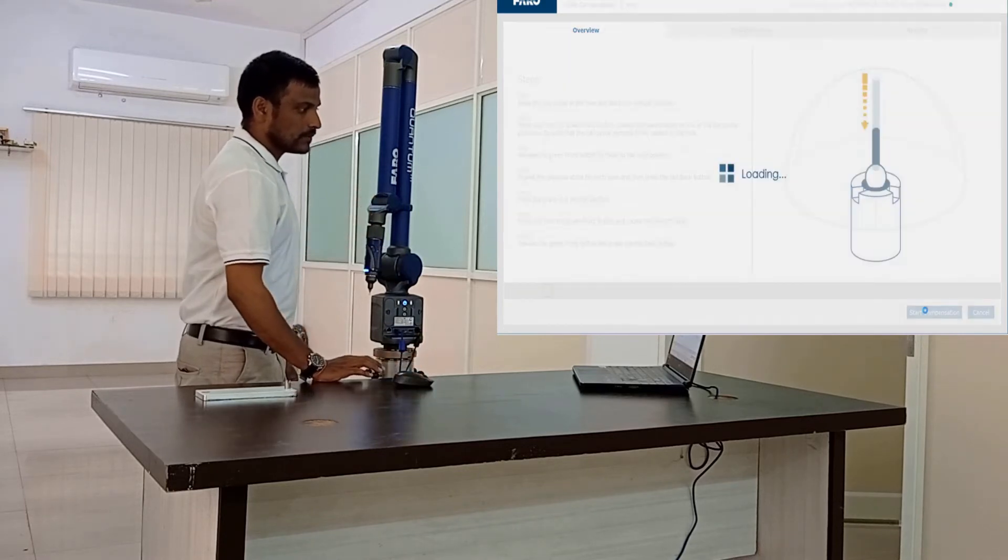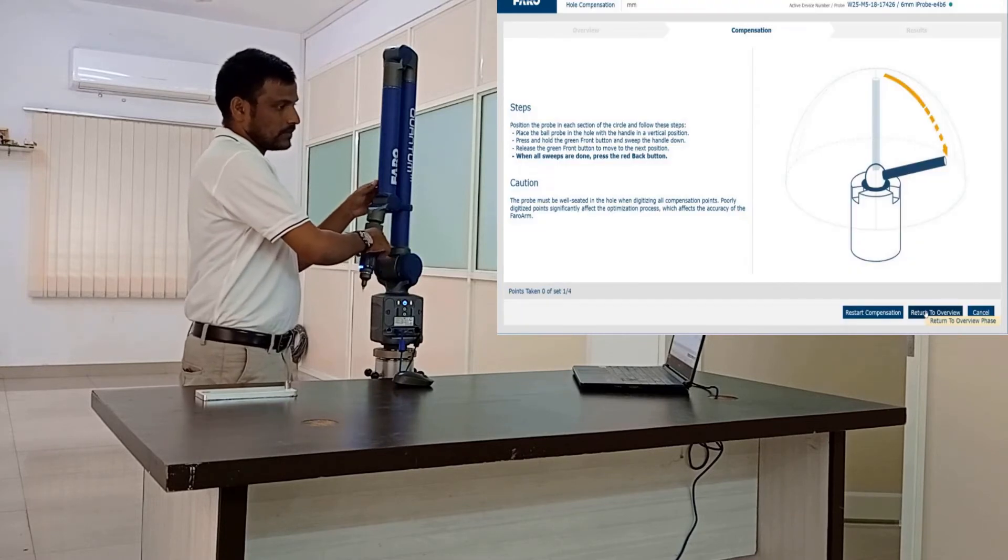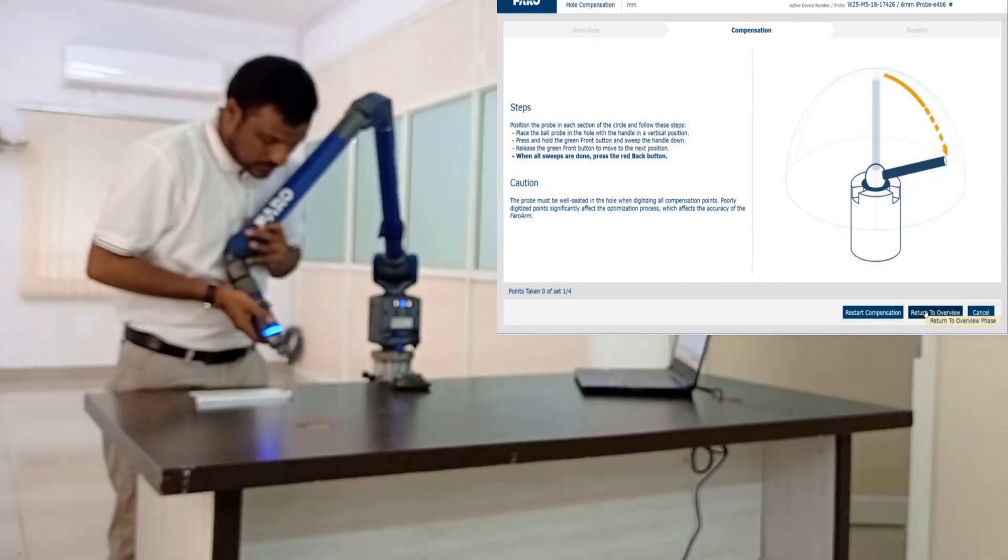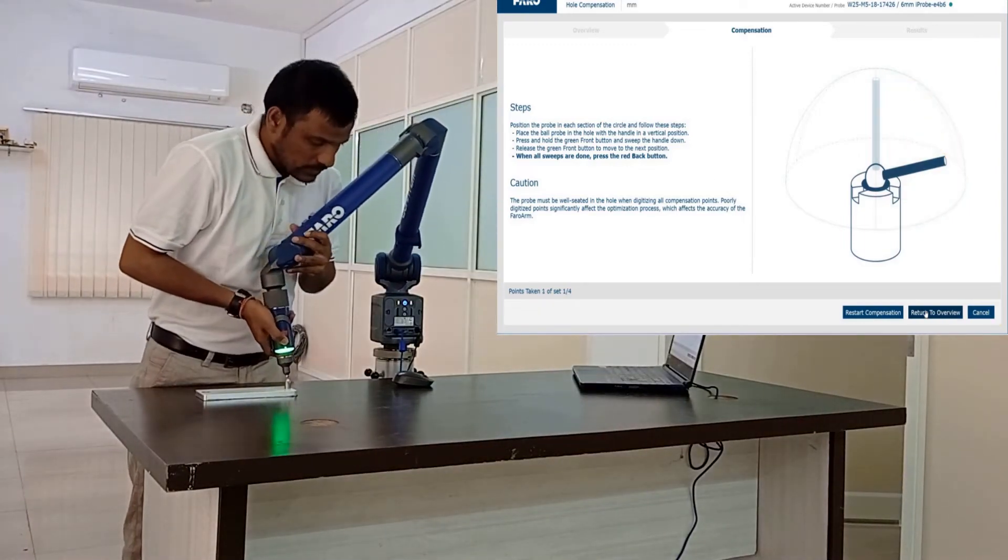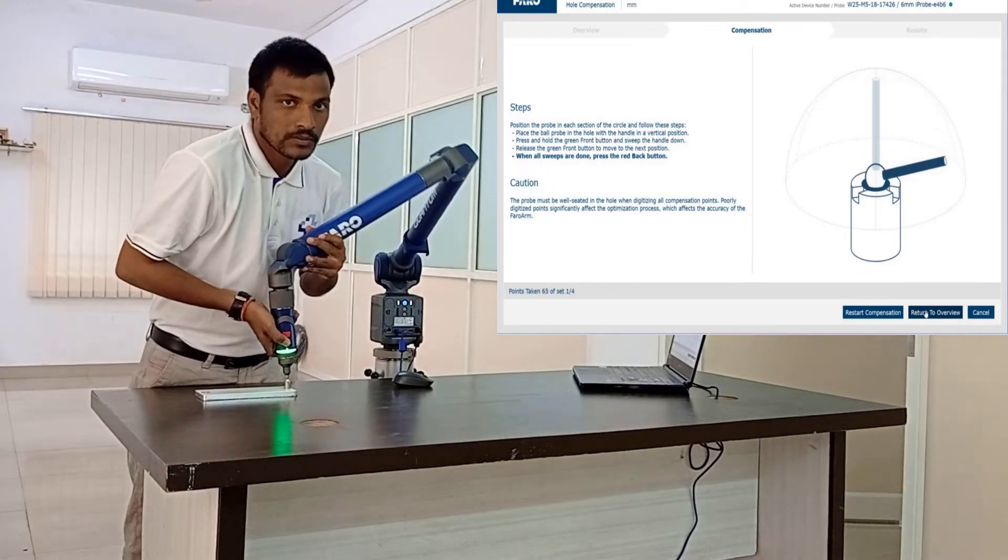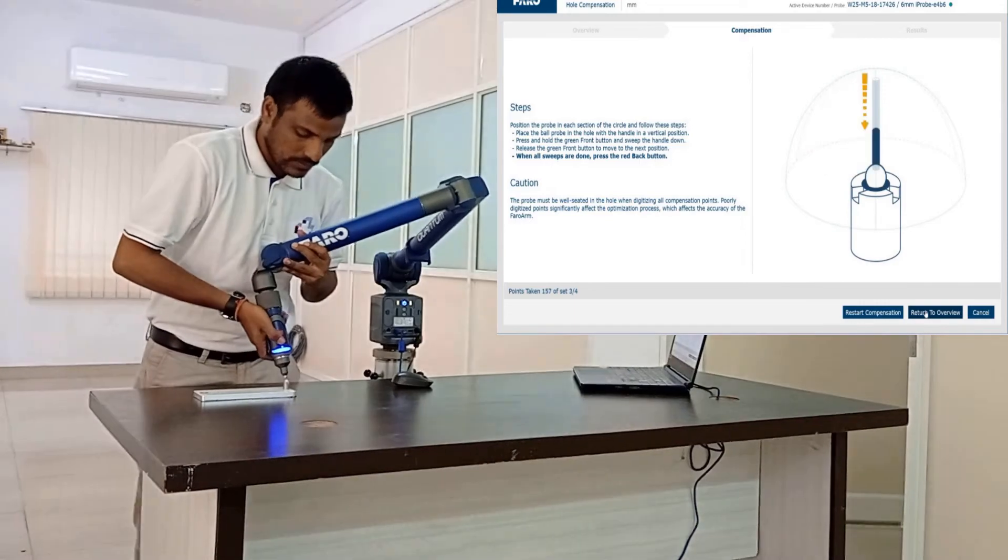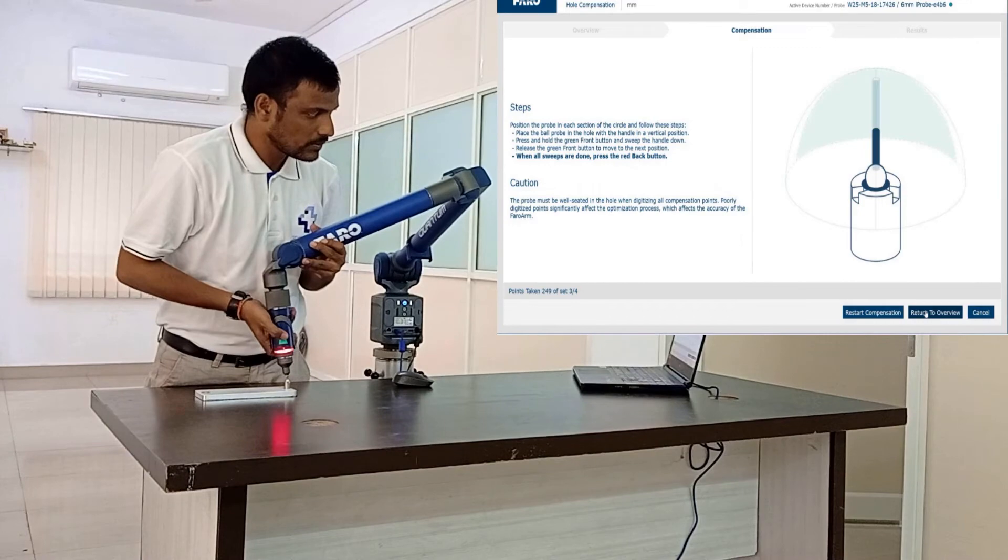First of all place the ball probe in the hole and start in a vertical position. Press and hold the green front button. Sweep to one of the horizontal positions. Ball probe has to be firmly seated in the hole. Release the green front button to move to the next position. After the three positions press red button. Place the probe in vertical position.